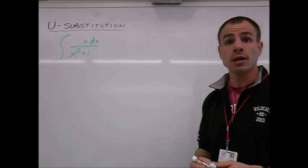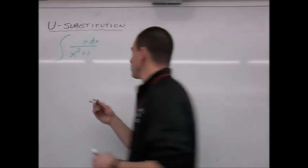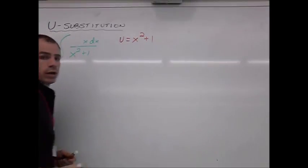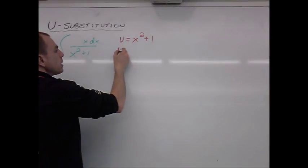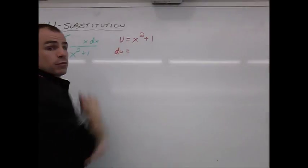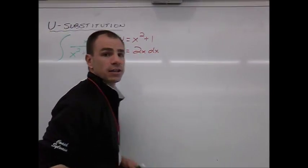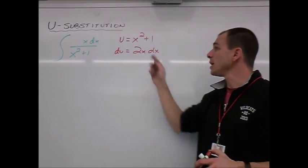All right, so u is going to be what we initially see in the denominator. Let's get that on the board. u is going to be x squared plus 1. All right, and now we can get our du, and the derivative of x squared plus 1 is going to be 2x dx. That's a nice, simple derivative for us to take.